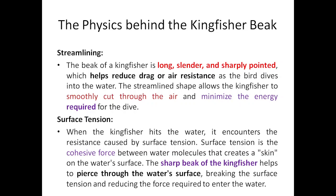There are many physics concepts we can explain regarding the kingfisher beak. We will start with streamlining. The beak of the kingfisher is long, slender, and sharply pointed. Because it is long, slender, and sharply pointed, this helps to reduce drag.